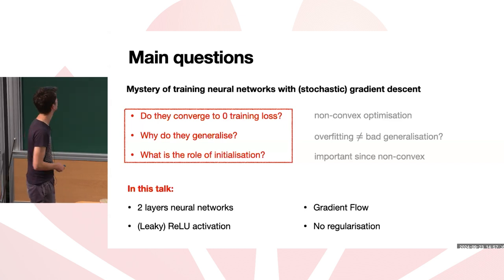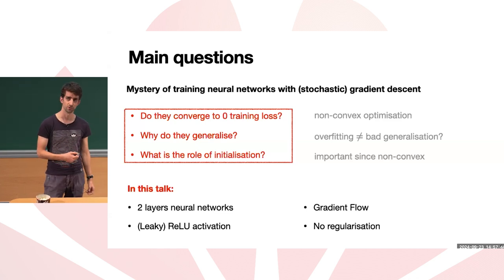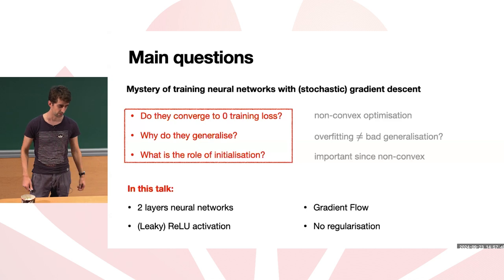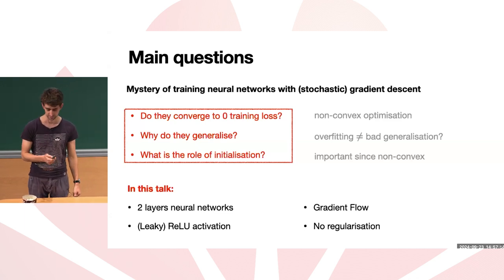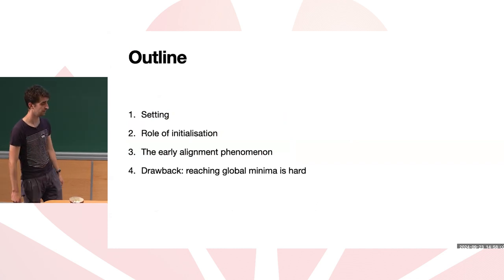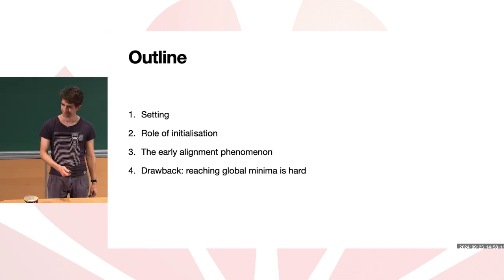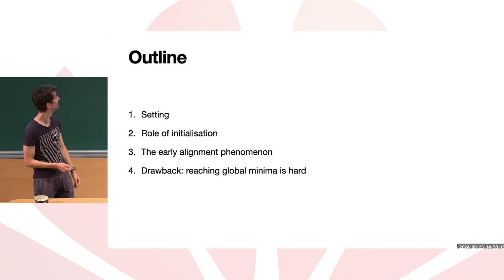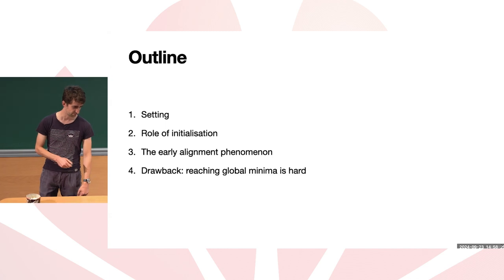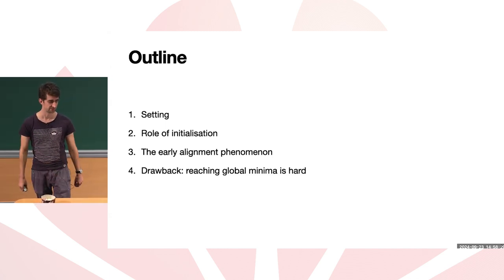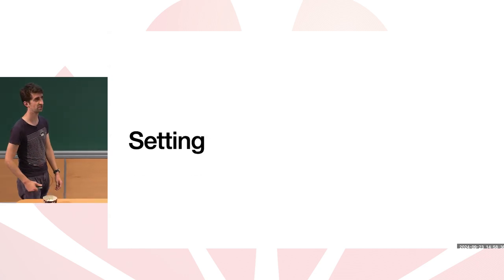In this talk I'll focus on a simple example for which we can actually do some math: two-layer neural networks, with only two layers composed to produce the output, using ReLU activation and no regularization, trained under gradient flow. The talk will cover: the setting, the role of initialization, the early alignment phenomenon, and its implications for implicit bias and optimization towards a global minimum.